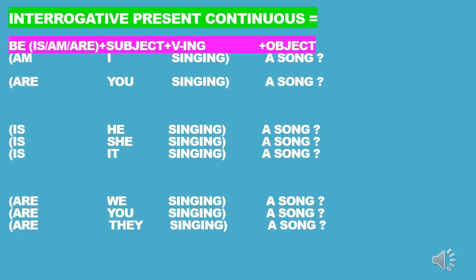'Are' is the verb to be, 'we' is the subject, 'singing' comes from the verb 'sing', 'a song' is the object. 'Are' is the verb to be, 'you' is the subject — here 'you' is the plural one, meaning all of you, 'kalian semua', more than one. 'Singing' comes from 'sing', 'a song' is the object. 'Are' is the verb to be, 'they' is the subject, 'singing' from 'sing', 'a song' is the object.